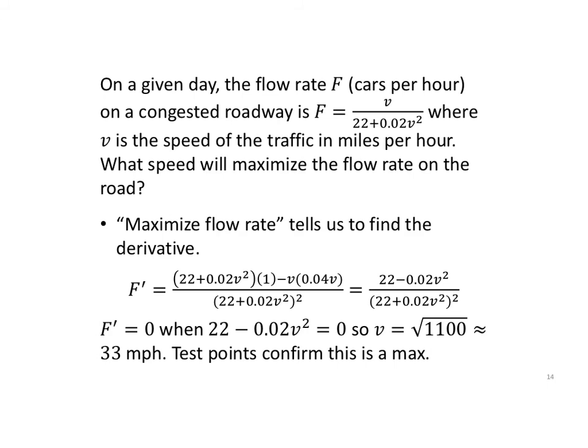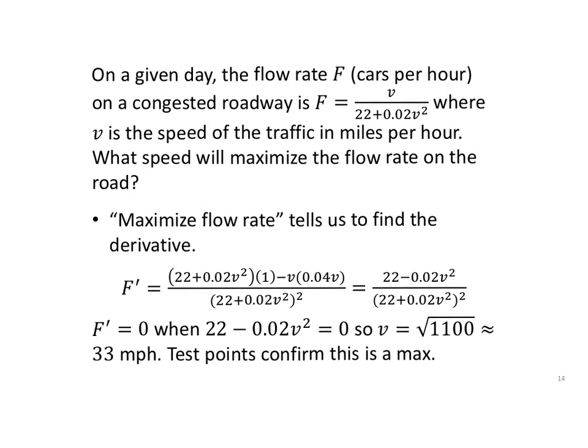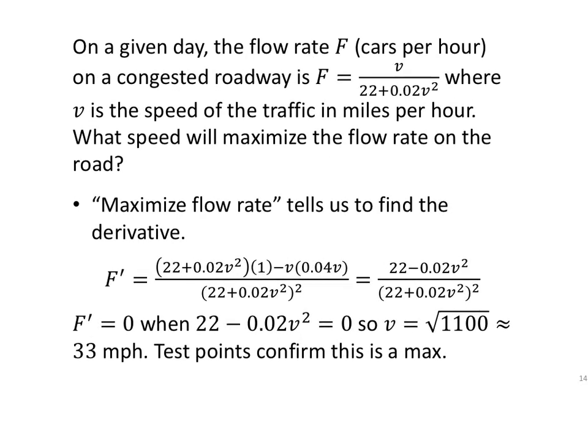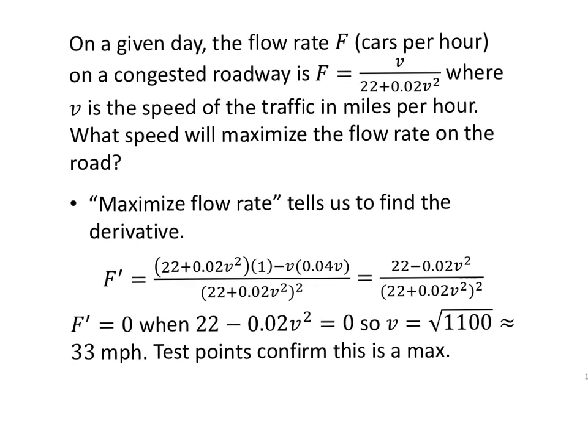Let's look at traffic. One little example of something real life, but we don't get a flow rate given to us very often. On a given day, the flow rate F (cars per hour) on a congested roadway is F = v / (22 + 0.02v²), where v is the speed of the traffic in miles per hour. What speed will maximize the flow rate on the road? Well, maximize flow rate. Maximize tells us we're going to have to look at a derivative.